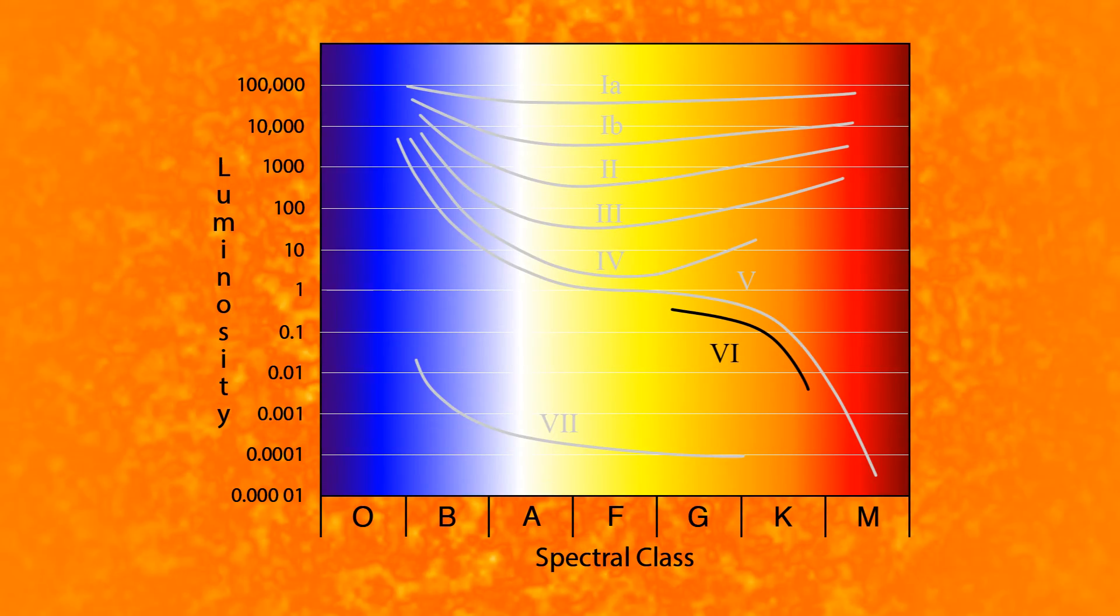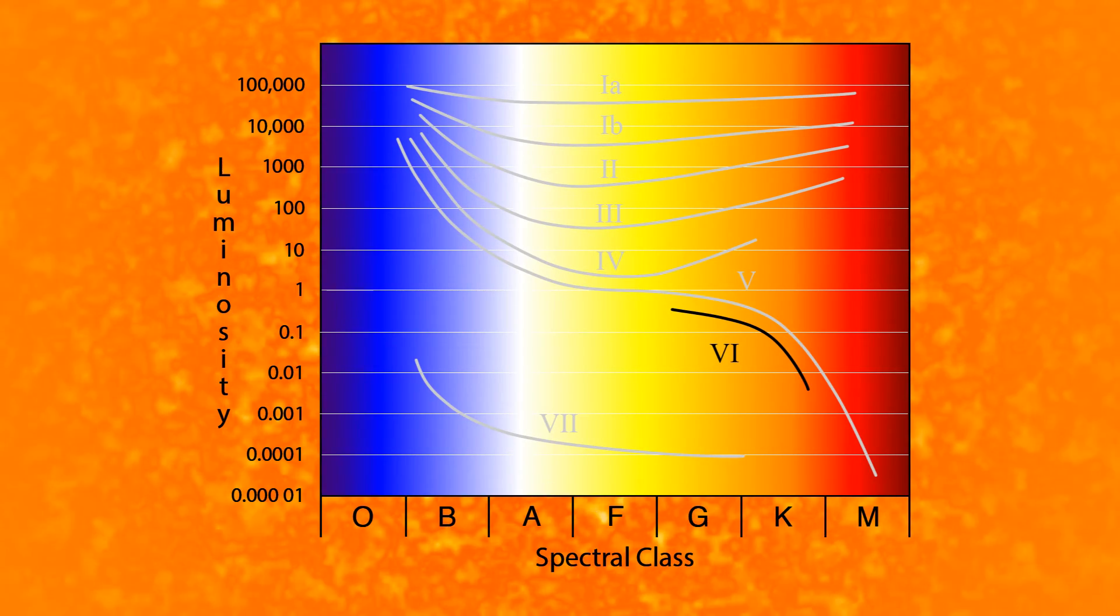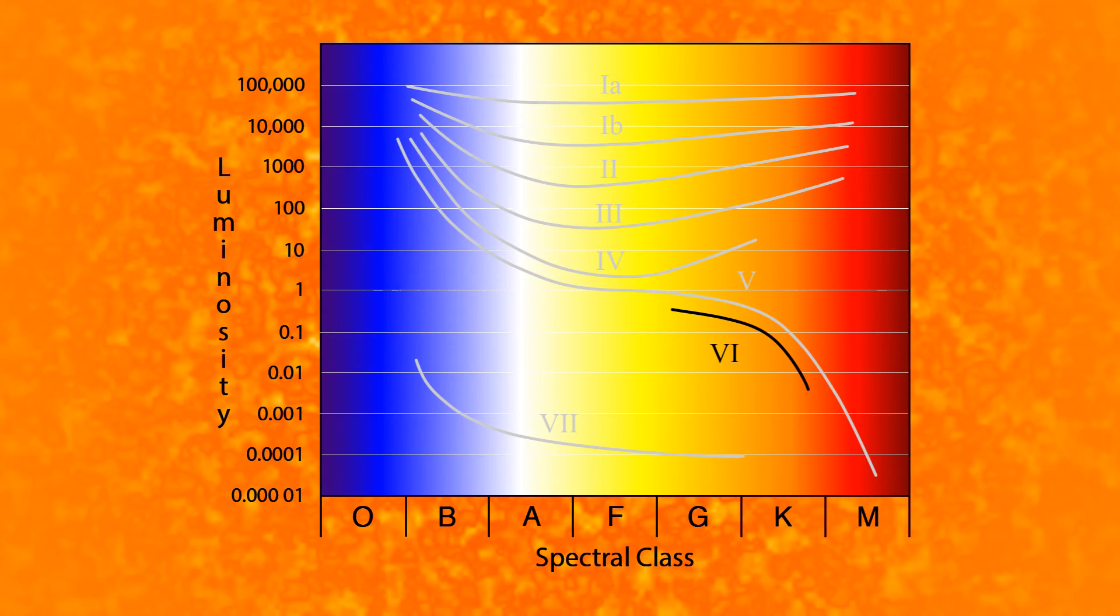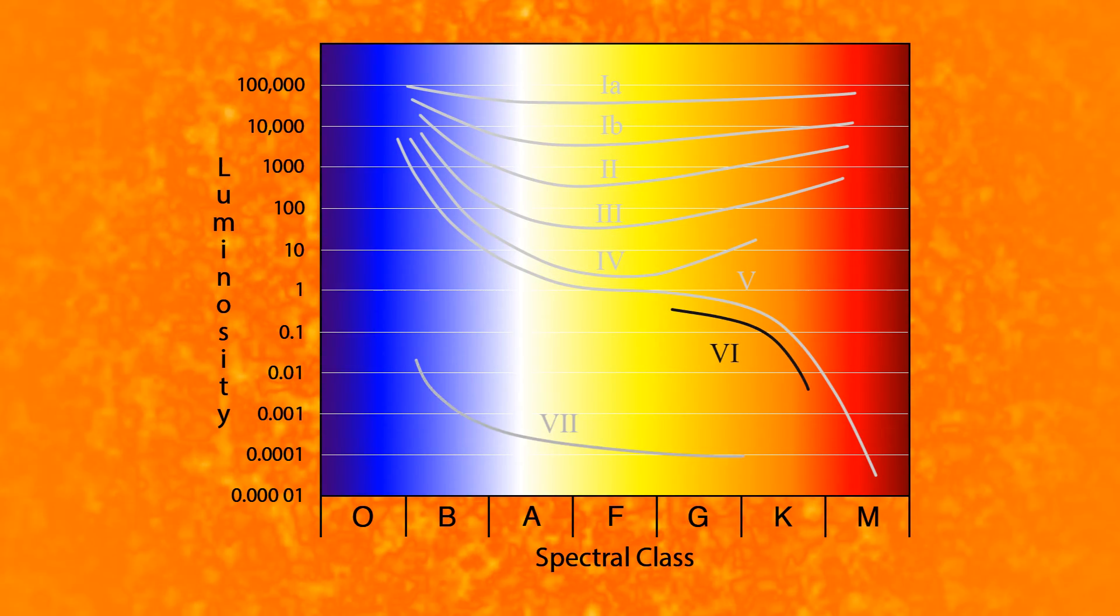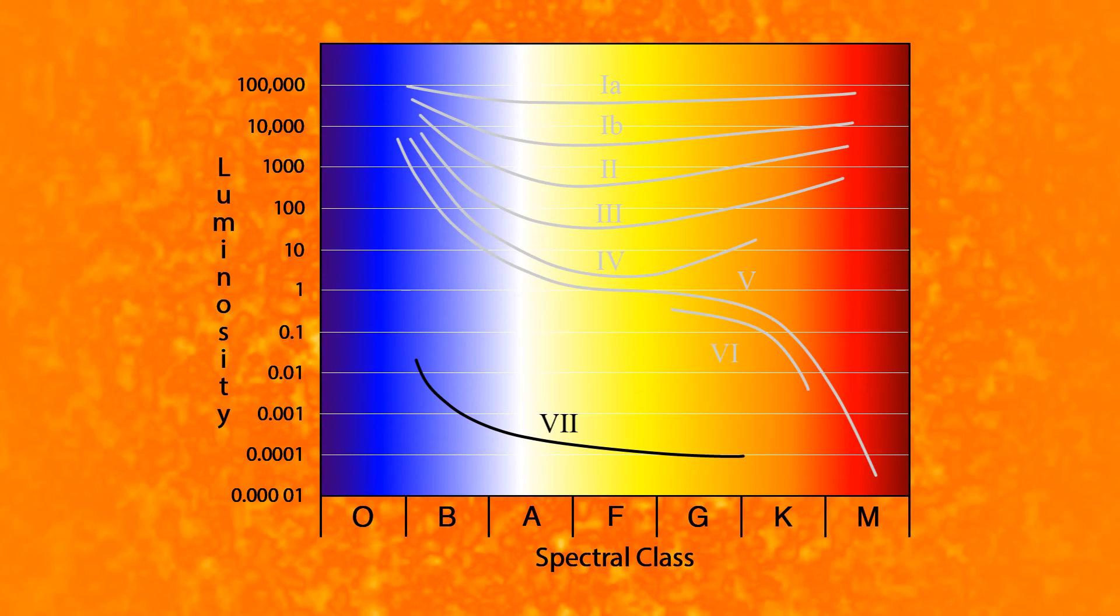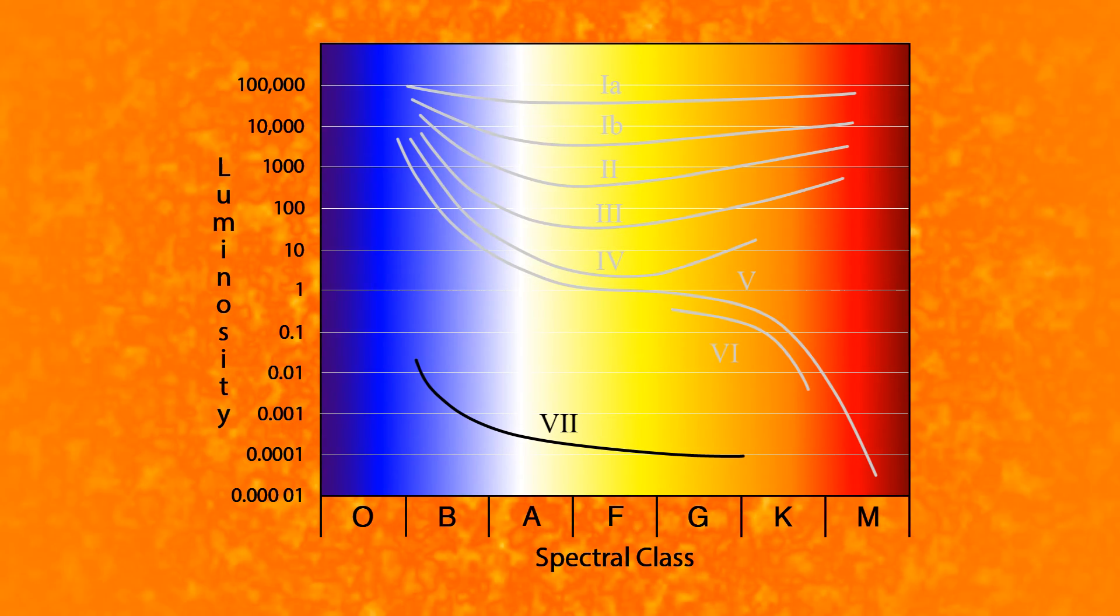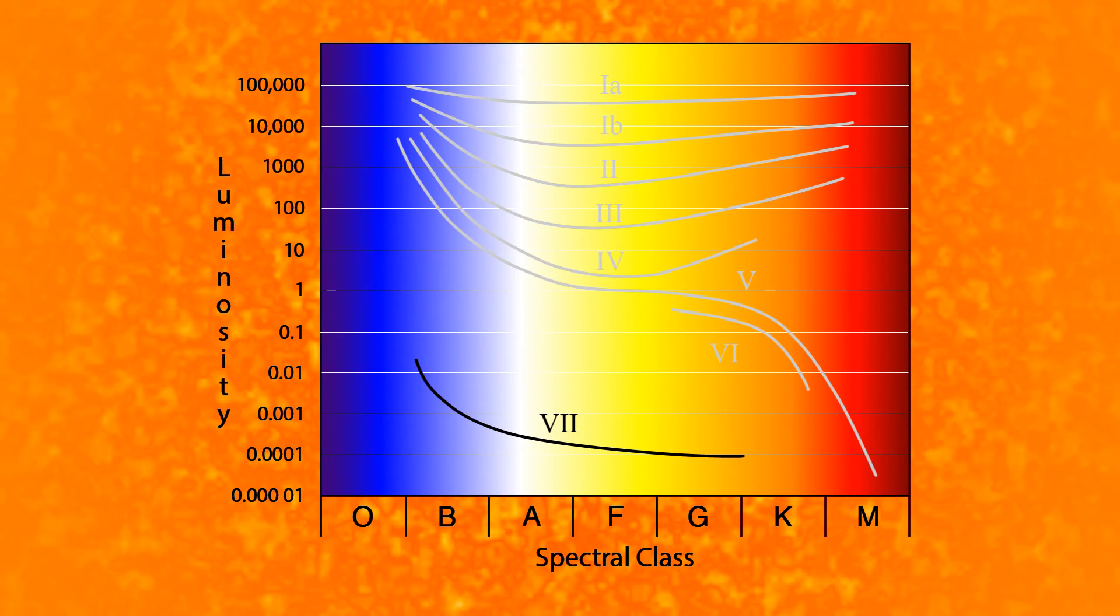The next group are the sub-dwarf stars. They are stars that are burning hydrogen but are not as bright as they should be for their size. The last luminosity class is the white dwarfs. These are the stellar corpses of large stars.